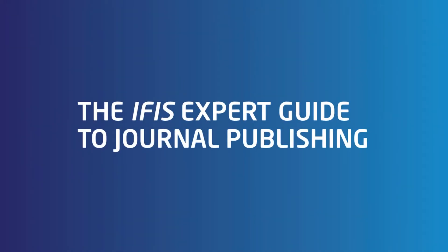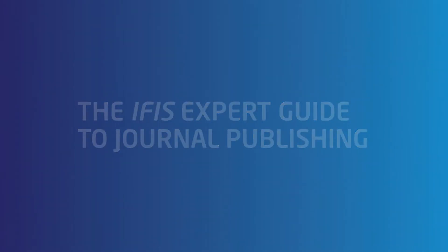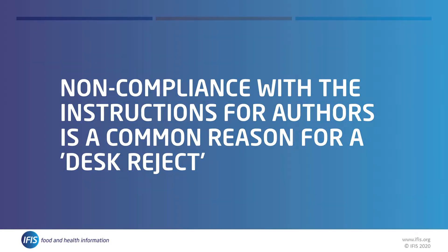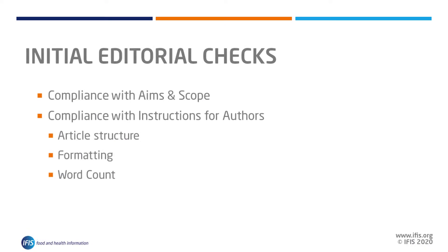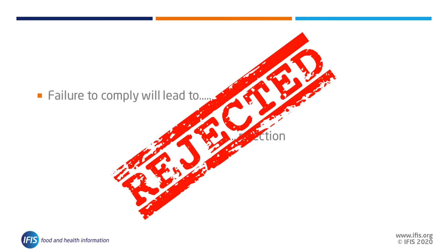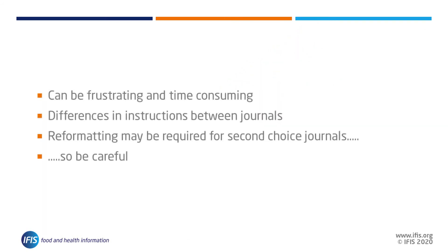In this part of our expert guide to journal publishing series, we look at technical submission requirements in the instructions for authors. Failure to comply with instructions for authors sits alongside aims and scope as the top reason articles are rejected from journals. This is usually because the first editorial check is for these features — for example, the structure, formatting, word counts, and many others. It is an all too common hurdle over which authors fall, and can result in what is known as a desk reject.